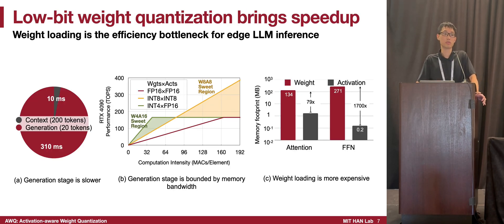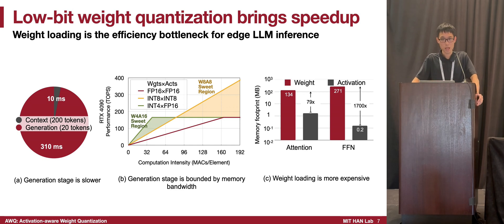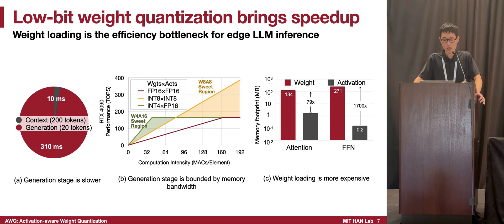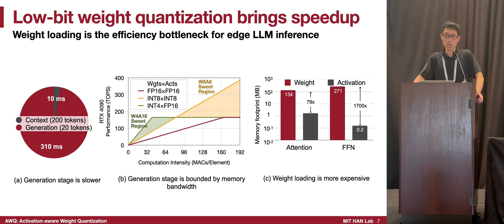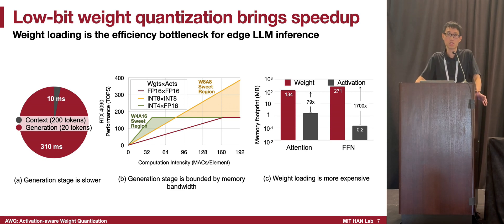From a more global point of view, we break down large language model inference into two stages. The first stage is the prefill stage, which is much faster than the generation stage or autoregressive decoding stage, because it can be run in one pass using very high batch sizes and mapped onto tensor cores. However, in the generation stage, the process is autoregressive and tokens are generated one by one, meaning our computation intensity is just one MAC per element. This lies in the sweet region of weight-only quantization rather than weight-and-activation quantization, because memory bandwidth is the more important factor. The weight traffic dominates because large language models have very large weights and the batch size is very small.